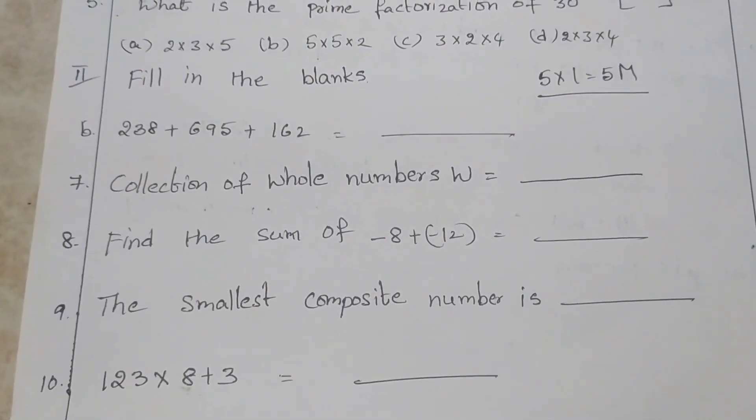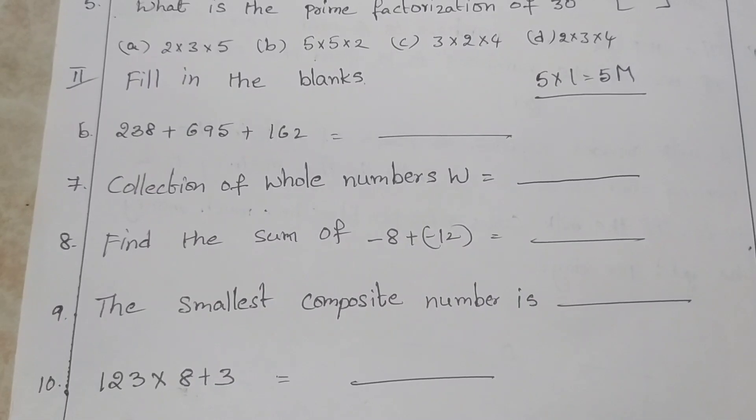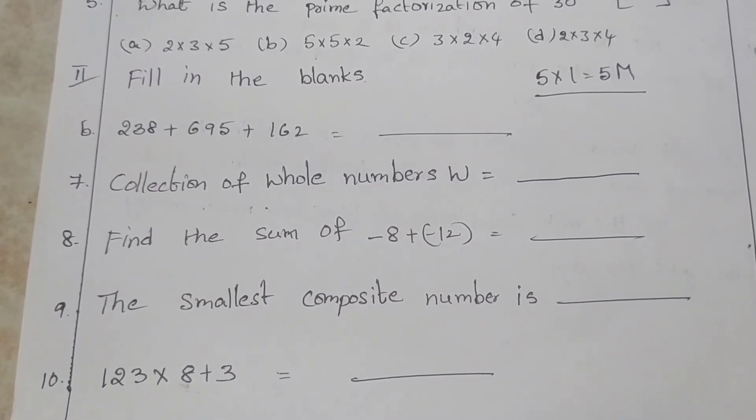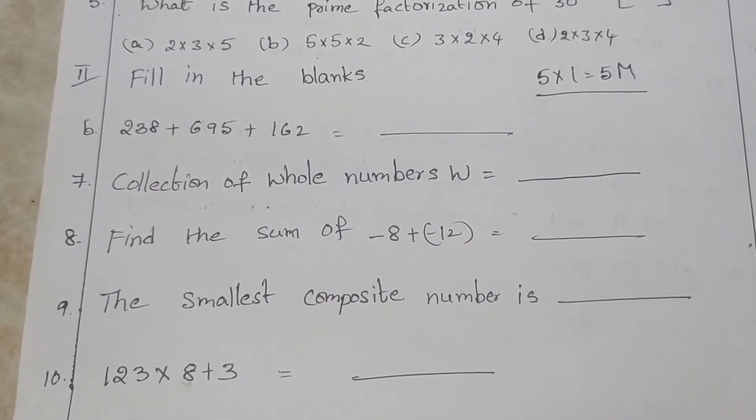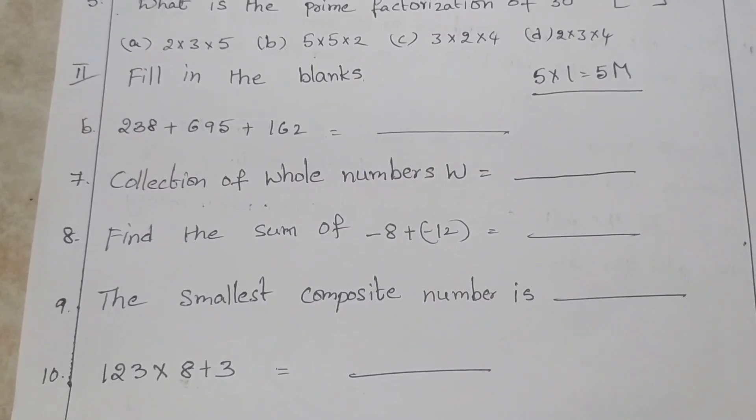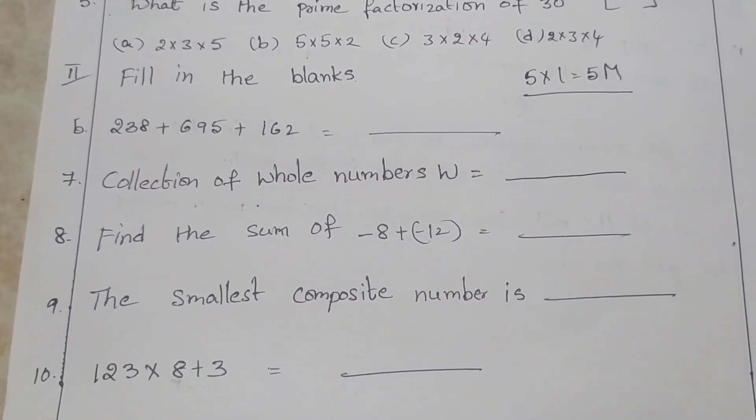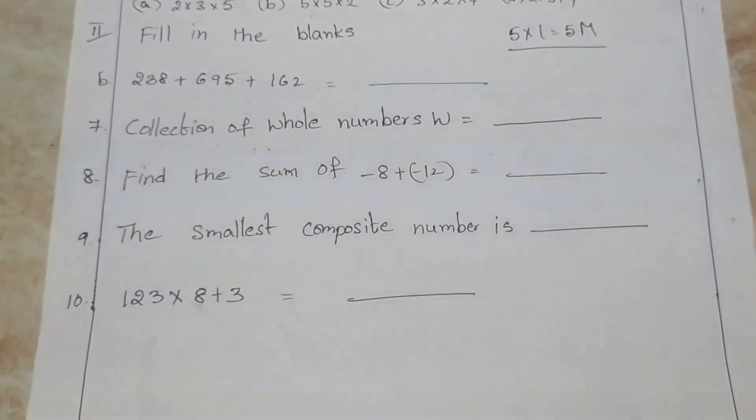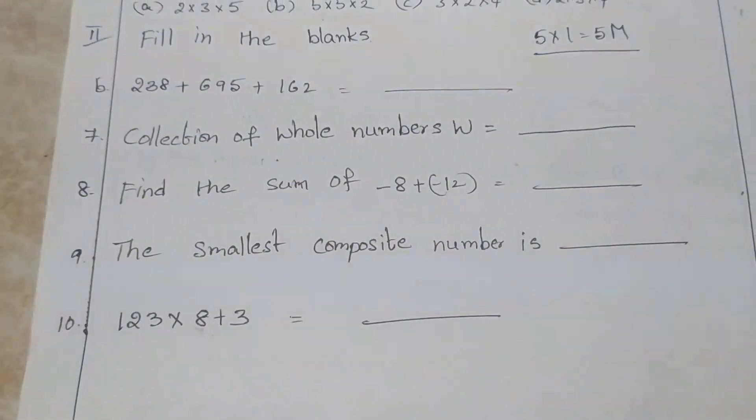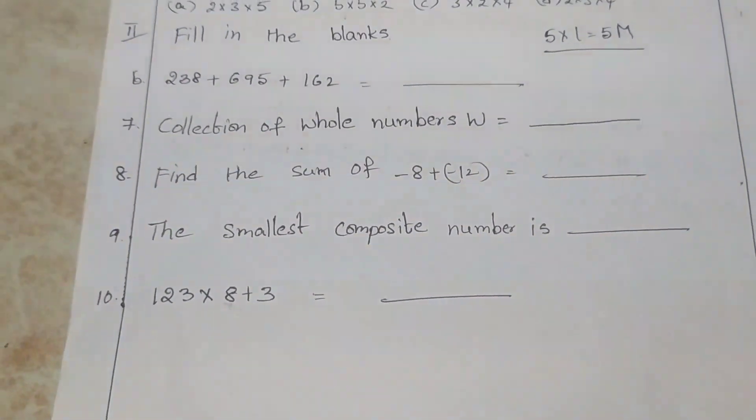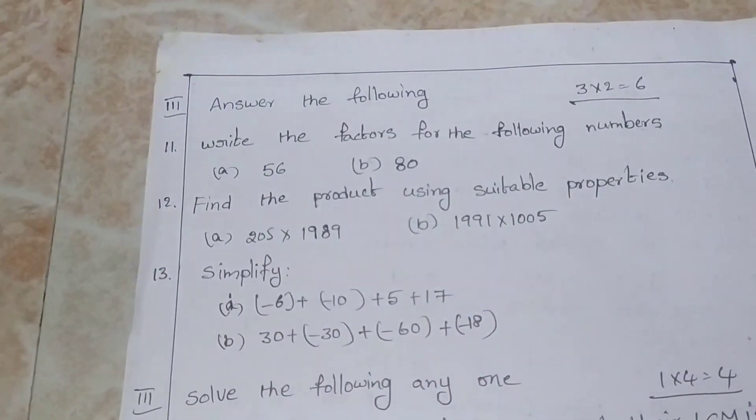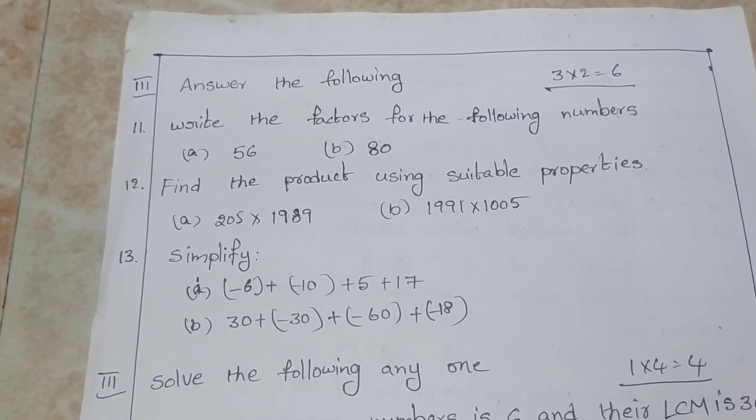Collection of whole numbers W is equal to. Find the sum of -8 + -12 is equal to. The smallest composite number is. 123 × 8 + 3 is equal to.